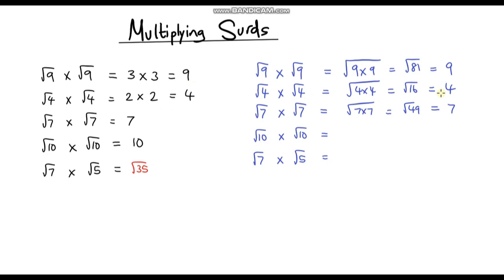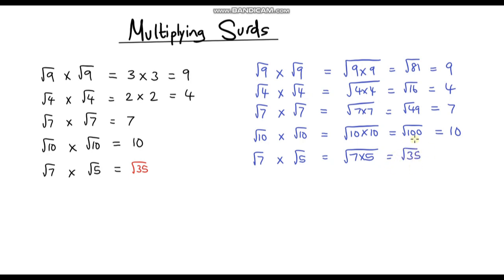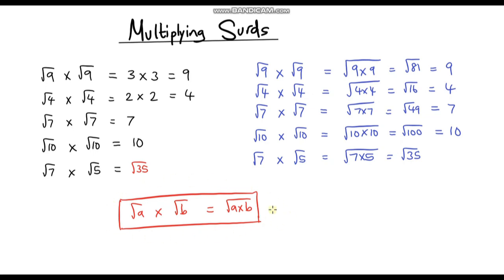Notice how I'm getting exactly the same answers — I'm just switching the order around. So for √7 × √7, we do the square root of 7 times 7. 7 times 7 is 49, so the square root of 49 is 7. And for √10 × √10, we do 10 times 10 and then take the square root. 10 times 10 is 100, so it's the square root of 100, which is 10. Now for √7 × √5, if I multiply first — 7 times 5 is 35 — then take the square root, that's the square root of 35. And this is a surd, so I can't simplify this anymore. So we've stumbled across a rule: √A multiplied by √B is exactly the same as the square root of A times B. This rule is really powerful because it allows us to multiply surds.